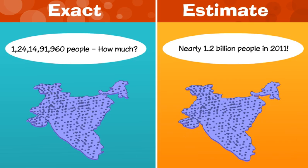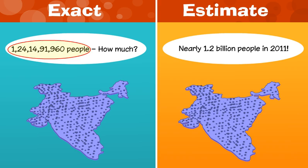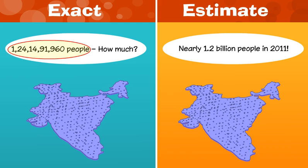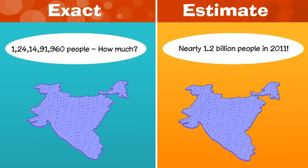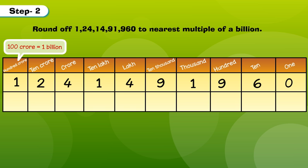According to the 2011 census, India's population was 1,024,014,091,960 people. Phew! Let's round that off to its nearest multiple of a billion. Step 1: Look at the multiple the number needs to be rounded off to. Step 2: Underline the digit in the 10 crores place.